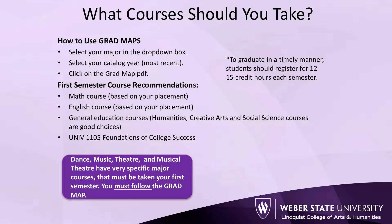For your first semester, we recommend that you take your required math and English course based on your placement. For other general education requirements, courses in the Humanities, Creative Arts, and Social Sciences are good options for your first semester. Make sure you are planning strategically, as some courses that satisfy general education requirements may also satisfy course requirements for your major. We also recommend that students take a University 1105 Foundations of College Success course to help get more acclimated to college life and to understand the necessary tools for academic success at Weber State University.